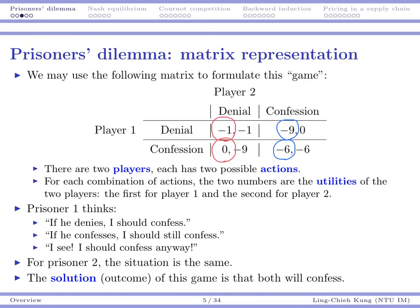For player two, it's the same thing. We can show directly that both of them will choose confession, because for both of them confession is a dominant strategy. So we can predict the result: both of them will choose confession and be put in jail for six months. We call this the solution of this game.